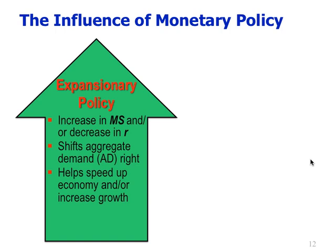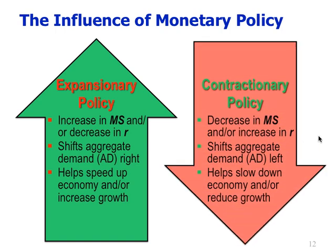Monetary policy can be either expansionary — the idea of increasing the money supply and/or decreasing interest rates — with the goal of shifting the aggregate demand curve to the right, increasing aggregate demand, which will help speed up the economy and/or increase growth. That's expansionary policy. Contractionary monetary policy would be the opposite: decrease the money supply and/or increase interest rates to shift aggregate demand to the left and slow down the economy when it's overheated.